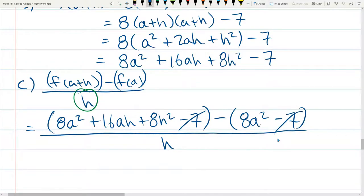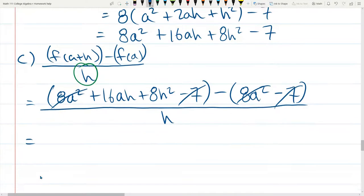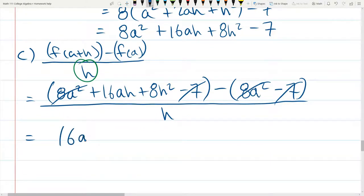Of course, negative 7 minus 7 is negative 14, but the second negative 7 is actually positive because we're subtracting a negative 7. So, this is really negative 7 plus 7 cancels to 0. There's another term that cancels. 8 a squared cancels. The second 8 a squared is subtracted. So, they cancel out. And we're left with 16 a h plus 8 h squared divided by h.